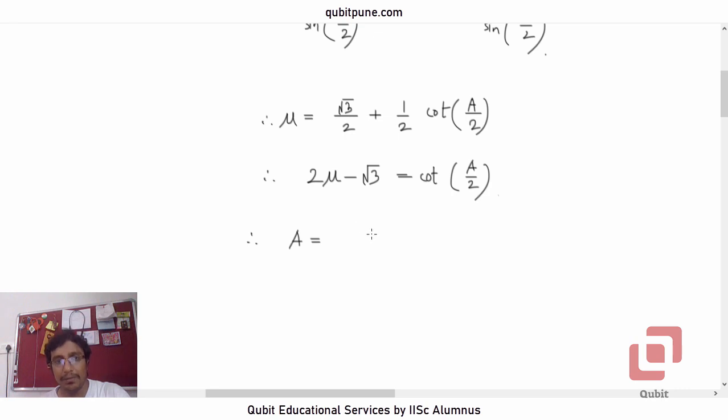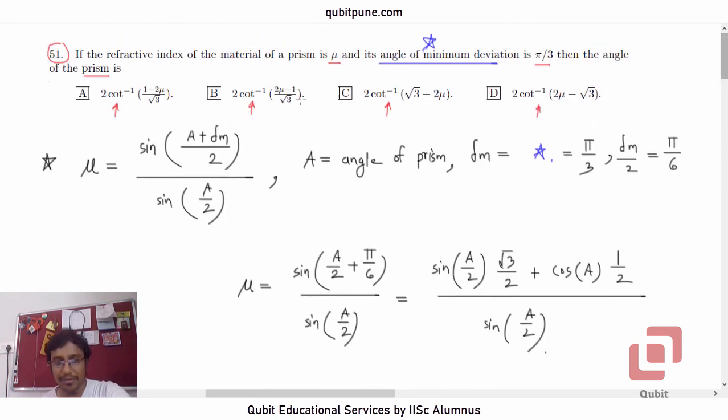First, you take cot inverse of 2μ minus √3. But will that give us A? No, that will give us A/2. So you need to multiply this by 2. So 2 times cot inverse of 2μ minus √3 is the right option.